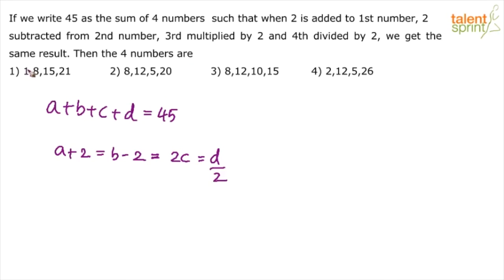Now check option 1. Is the sum 45 first of all? Or you can in fact eliminate the options much faster by verifying this condition first. Instead of finding out the sum, I would say first verify the first condition. What is the first condition? First number plus 2, second number minus 2 should be equal. So first number plus 2 is 3. Second number minus 2 is 6. Are they equal? No. Option 1 is wrong.